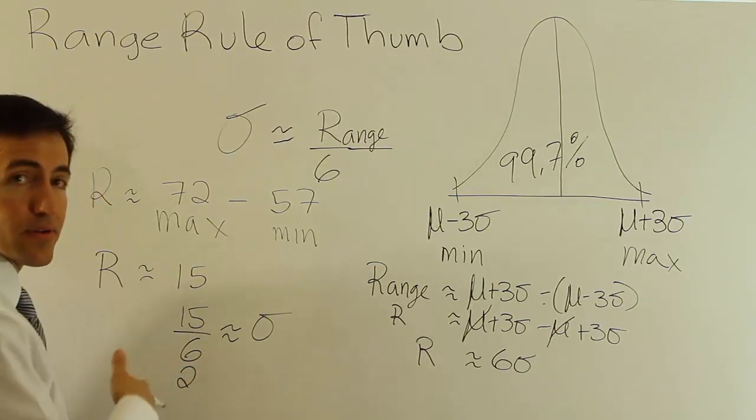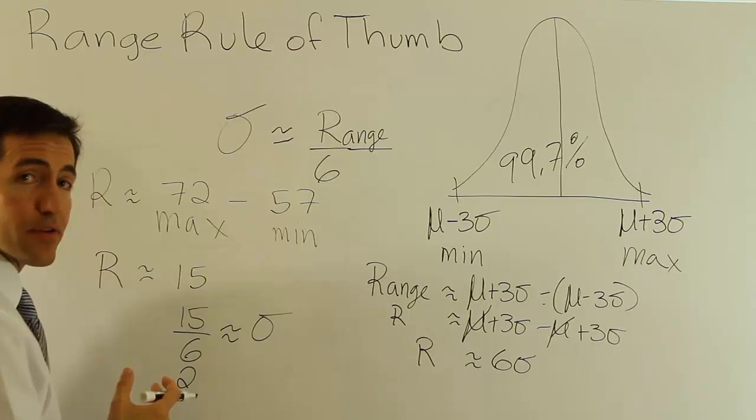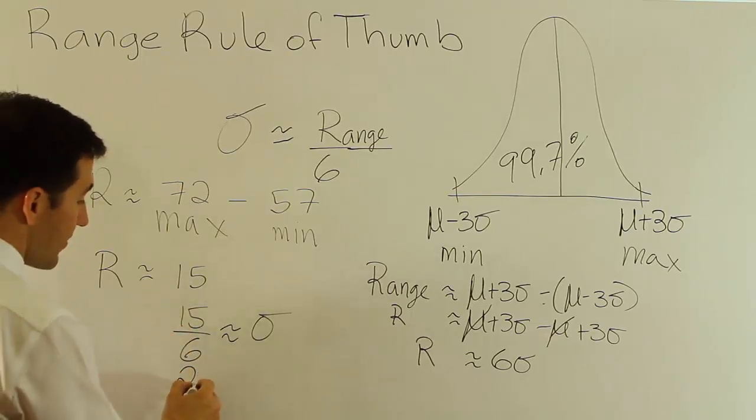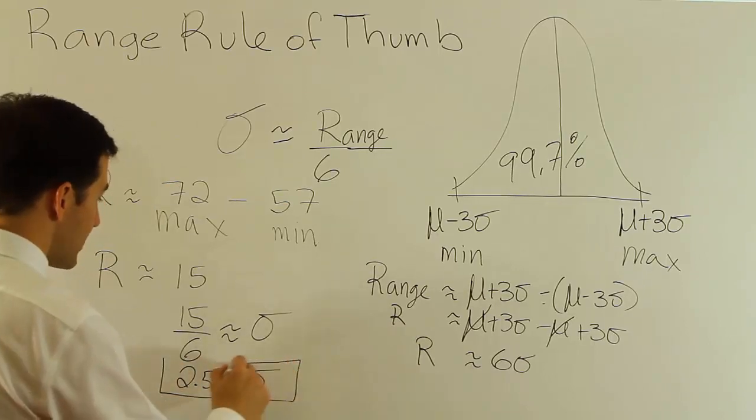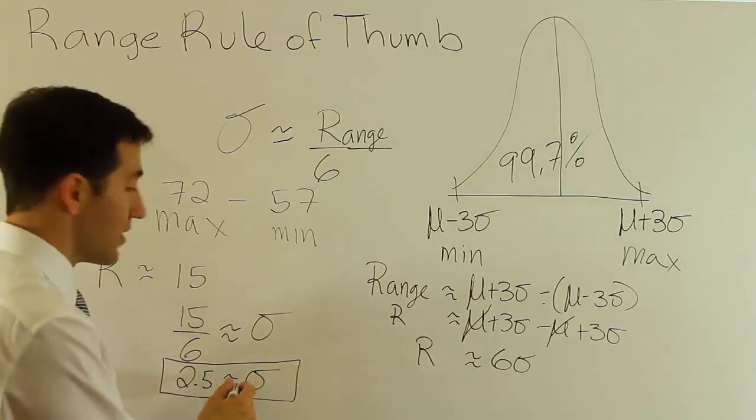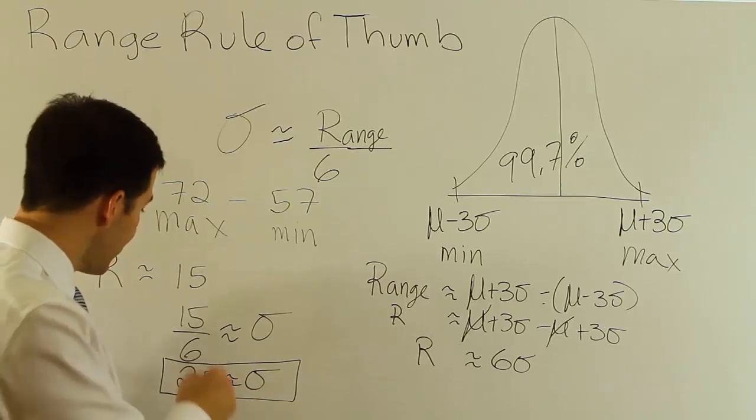3 over 6 is a half, so that's 0.5. So you get approximately 2 and a half. And so that is my approximation for the population standard deviation for female heights, 2.5.